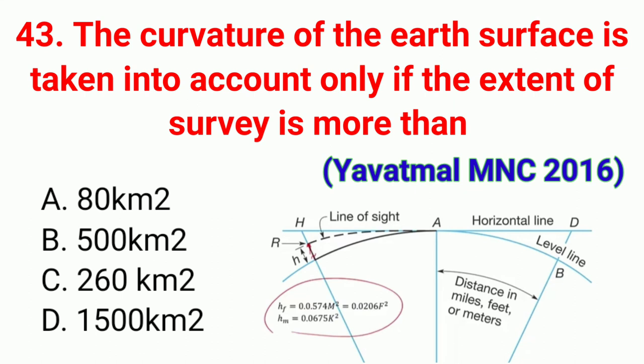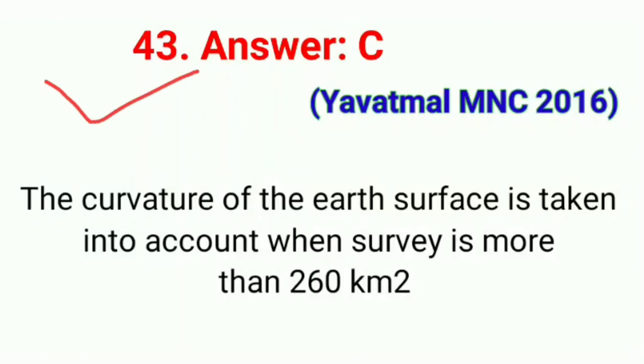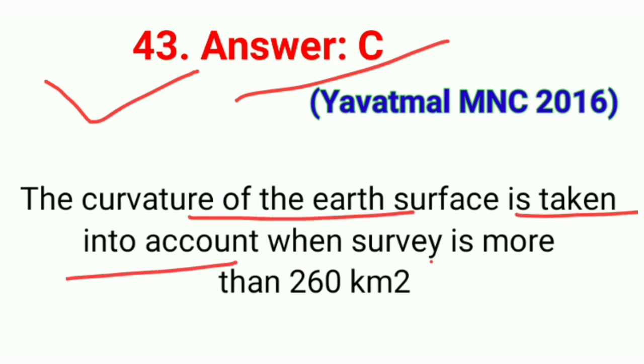Question number forty-three: The curvature of the earth's surface is taken into account only if the extent of survey is more than. This question was asked in Yavatmal MNC 2016. The correct answer is option C, 260 km². The curvature of the earth's surface is taken into account when the survey area is more than 260 km².